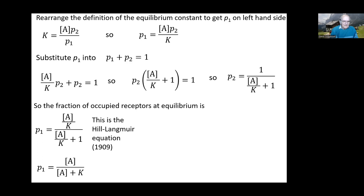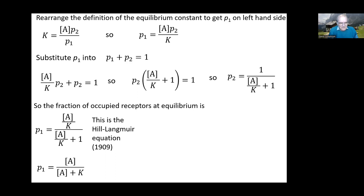This equation is more commonly known as the Langmuir adsorption equation, derived by Irving Langmuir in 1918–1919 to describe the adsorption of gases onto electric light bulb filaments. What he didn't know was that ten years earlier, A.V. Hill — still an undergraduate — had derived the same equation in the Journal of Physiology to describe the binding of nicotine and curare to receptors. It's said that Hill lived on the same staircase in Trinity College, Cambridge, as John Maynard Keynes and Bertrand Russell.